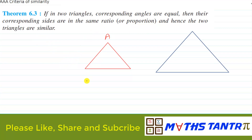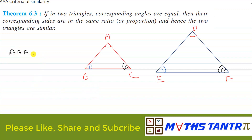For triangle ABC and triangle DEF, if corresponding angles — angle A equals angle D, angle B equals angle E, and angle C equals angle F — then these two triangles will be called similar triangles by using AA criteria, or AAA criteria. You can directly write just AA criteria.